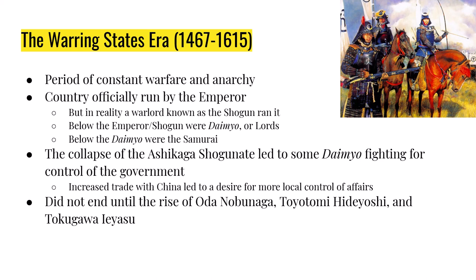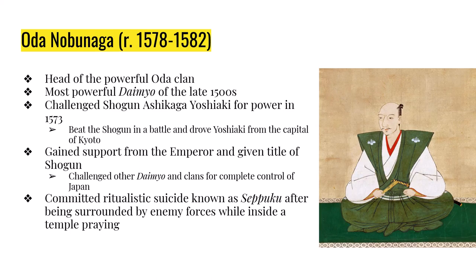The Warring States period — about 150 years — doesn't end until the rise of three uniters: Oda Nobunaga, Toyotomi Hideyoshi, and Tokugawa Ieyasu. Oda Nobunaga is in control of Japan from 1578 to 1582. He was the head of the powerful Oda clan and the most powerful lord in the late 1500s — really the first great unifier in Japanese history. In 1573, Nobunaga challenged the then-Shogun Ashikaga Yoshiaki, beat his army in battle, and drove Yoshiaki from the capital city of Kyoto, officially ending the Ashikaga Shogunate.